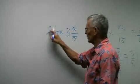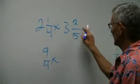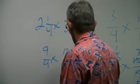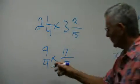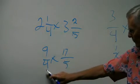So 2 times 4 is 8, plus 1 is 9, 9 fourths, times 3 times 5 is 15, plus 2 is 17 fifths, and here we cannot cross-cancel. Nothing goes evenly into 5 and 3 or 4 and 17.